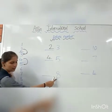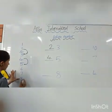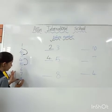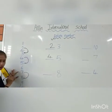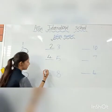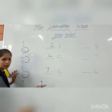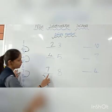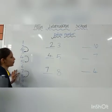This is 8. Here is 8. What comes before 8? The answer is 7. 7 comes before 8.